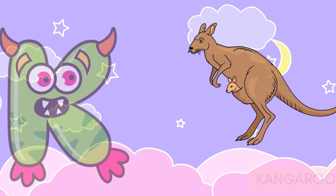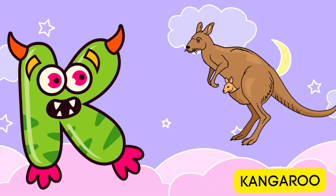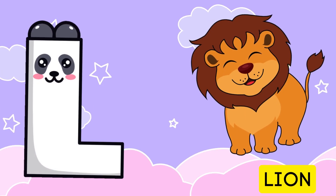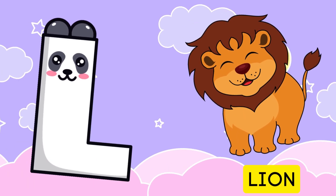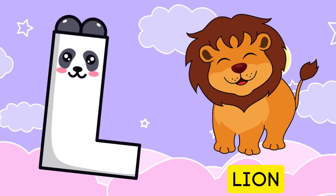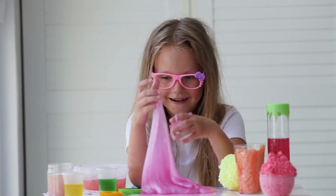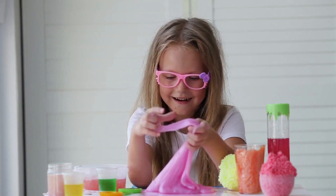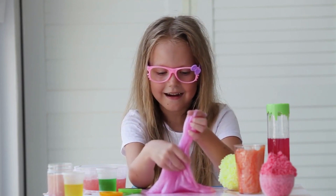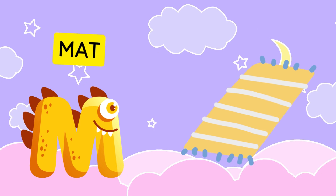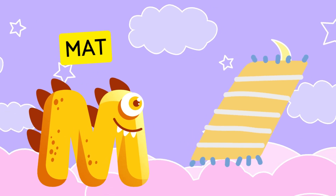K is for kangaroo, k-k-kangaroo. L is for lion, l-l-lion. M is for mat, m-m-mat.